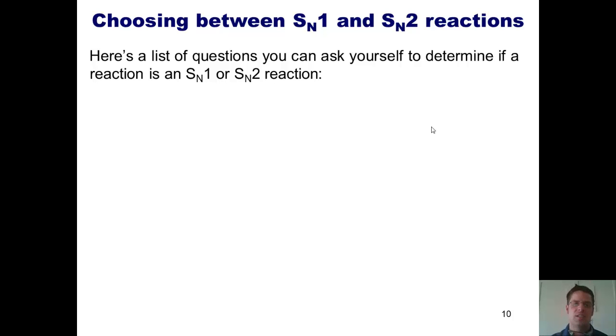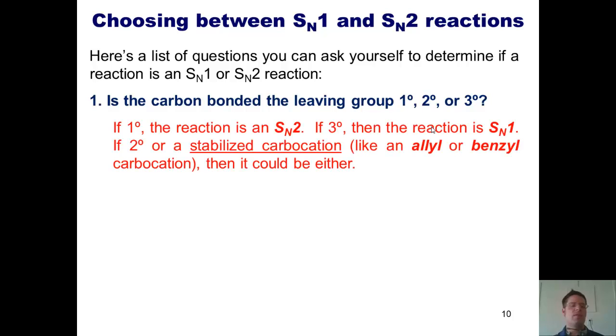Question number one is this: Is the carbon bonded to my leaving group primary, secondary, or tertiary? If it's primary, then the reaction goes SN2. If it's tertiary, then the reaction is SN1. If it's secondary, or if it's a stabilized carbocation such as an allyl or benzyl carbocation, then it could be either of the above.